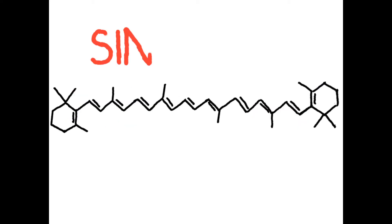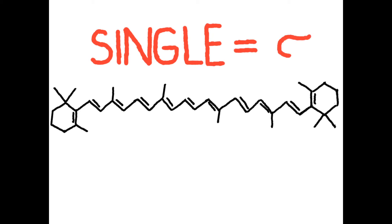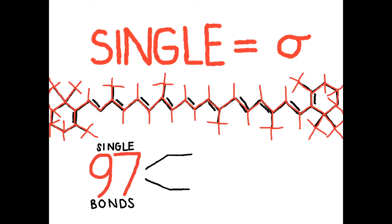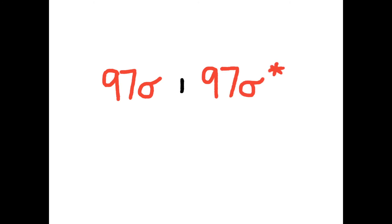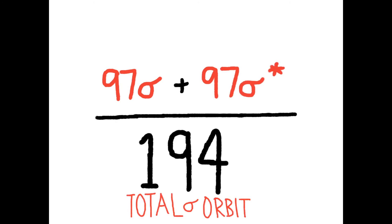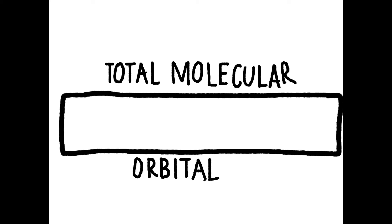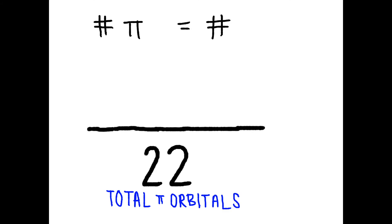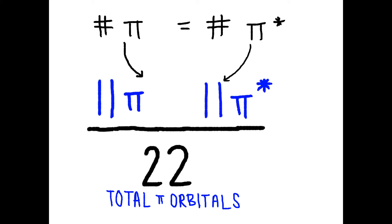It's time to find out how many of those molecular orbitals are sigma molecular orbitals. Each single bond in beta-carotene contributes an s-atomic orbital, which forms sigma bonds. We have a total of 97 single bonds, contributing 97 s-atomic orbitals. Each of these orbitals forms one sigma-bonding orbital and one sigma-antibonding orbital, making a total of 194 sigma molecular orbitals. Out of 216 total molecular orbitals, 194 are sigma. The remaining 22 orbitals will be pi molecular orbitals — 11 pi-bonding and 11 pi-antibonding.